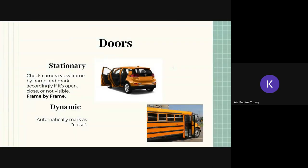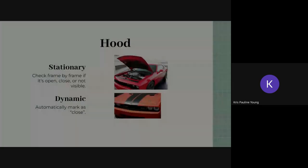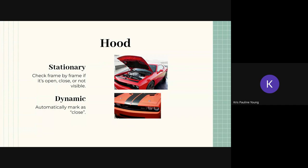Moving on to doors. For dynamic objects, the doors are automatically marked as closed because we assume that they're moving and as such the doors should remain closed. However, for stationary objects, this is again another frame by frame attribute, so check it according to camera view if it's open, closed, or not visible. Similar rules for our trunk and our hood. As long as it's dynamic, mark it as closed. Stationary, frame by frame.